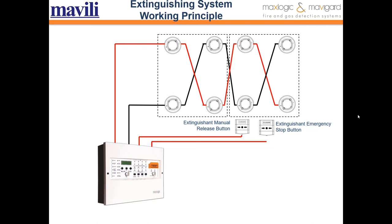Let's talk about the extinguishing system working principle. First, the priorities of fire effects — such as smoke, temperature, or flame — are determined in the location where the gas extinguishing system will be designed. Cross-zone detection is done with at least two detectors in each zone, and the detector type of each zone must be different, such as smoke and temperature. If there is a suspended ceiling, raised floor, cabinet, or cabinets in the area, separate detection should be made in each section.